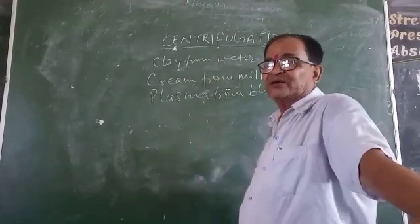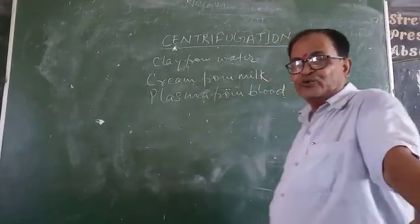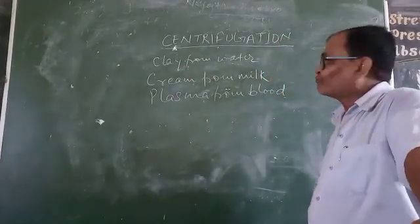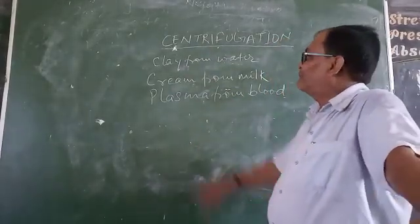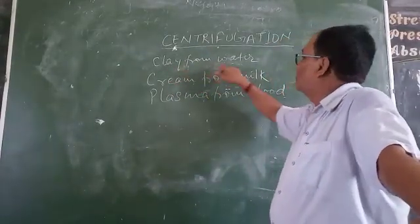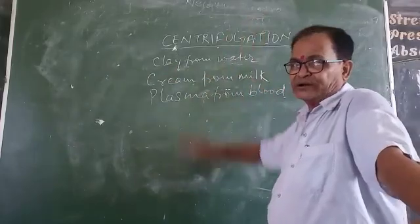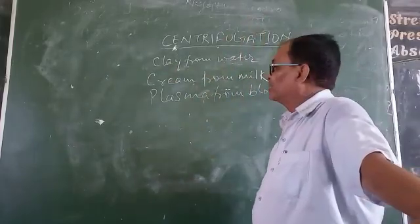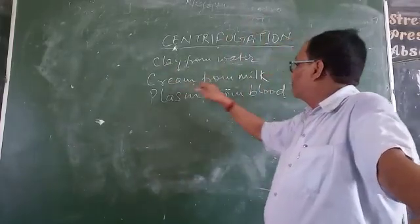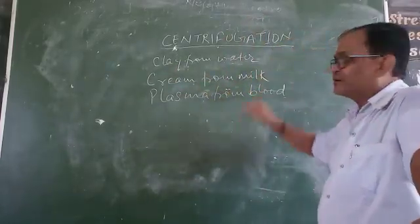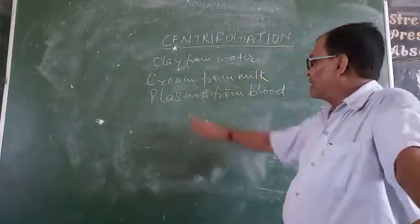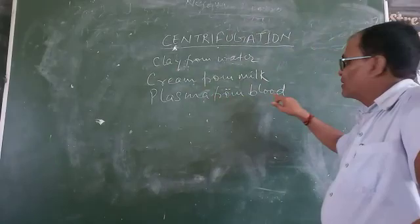Today I am going to tell you about the centrifugation process. By using this process we separate suspended particles in a liquid — for example, clay from muddy water, cream from milk, and plasma from blood.